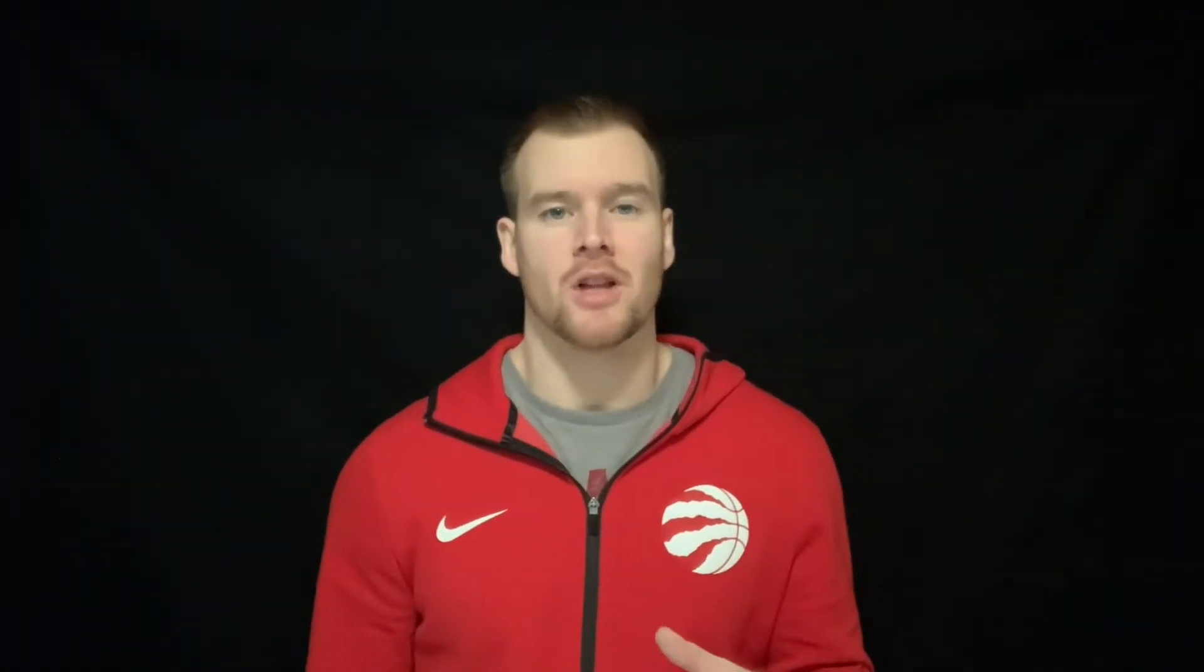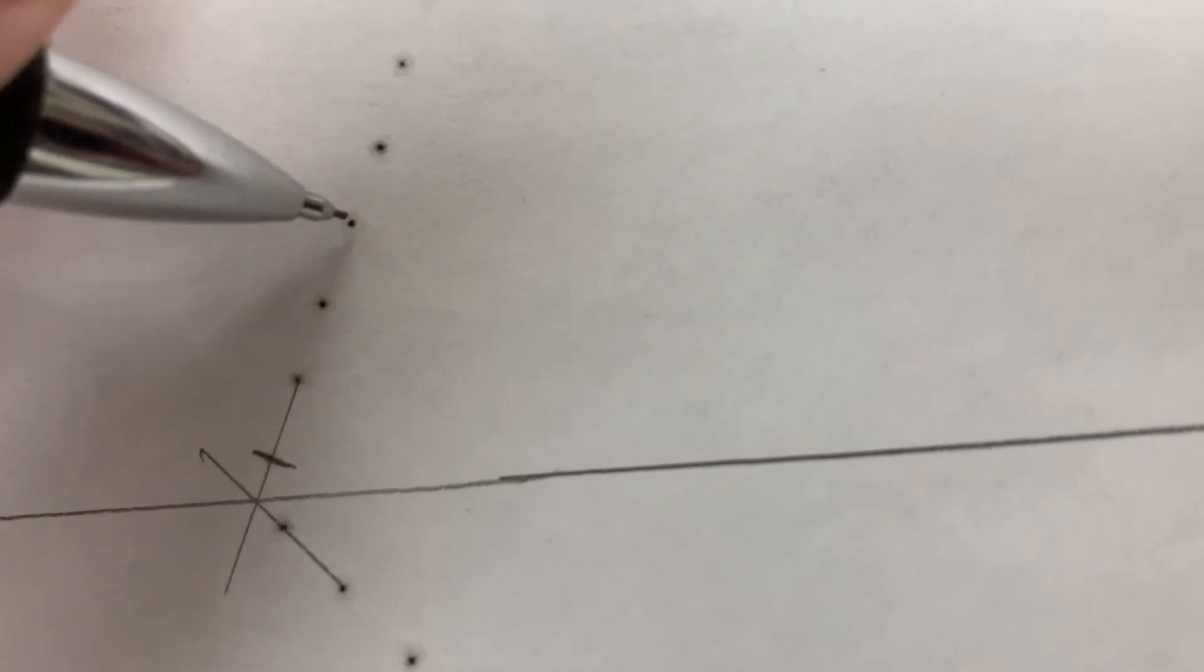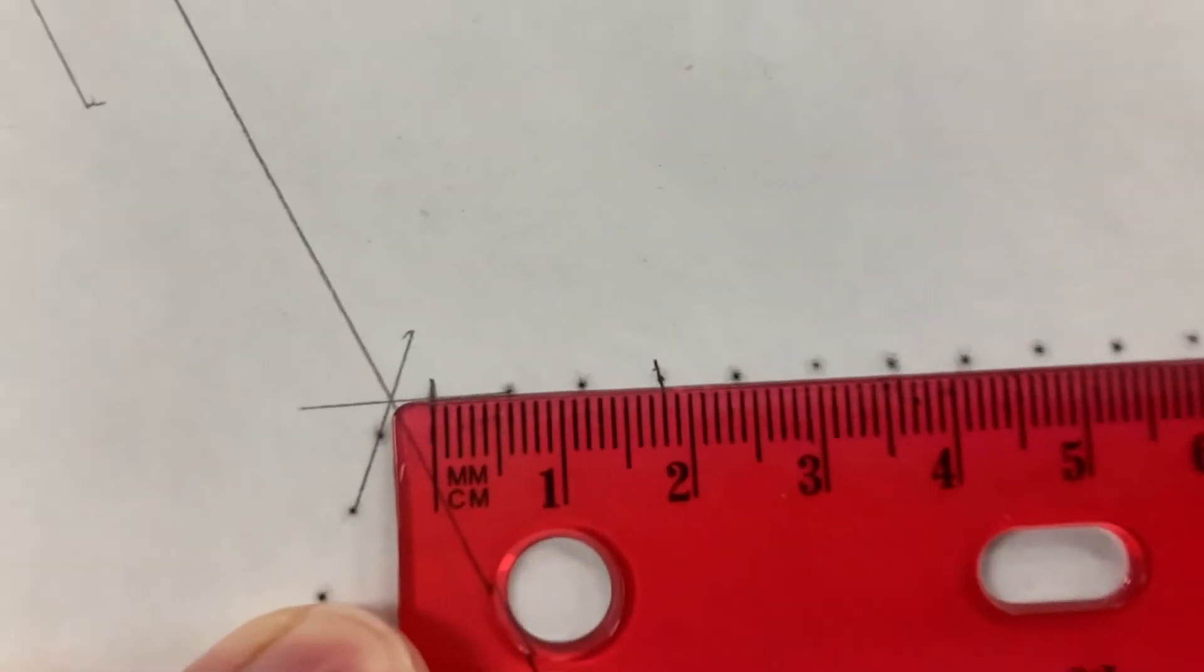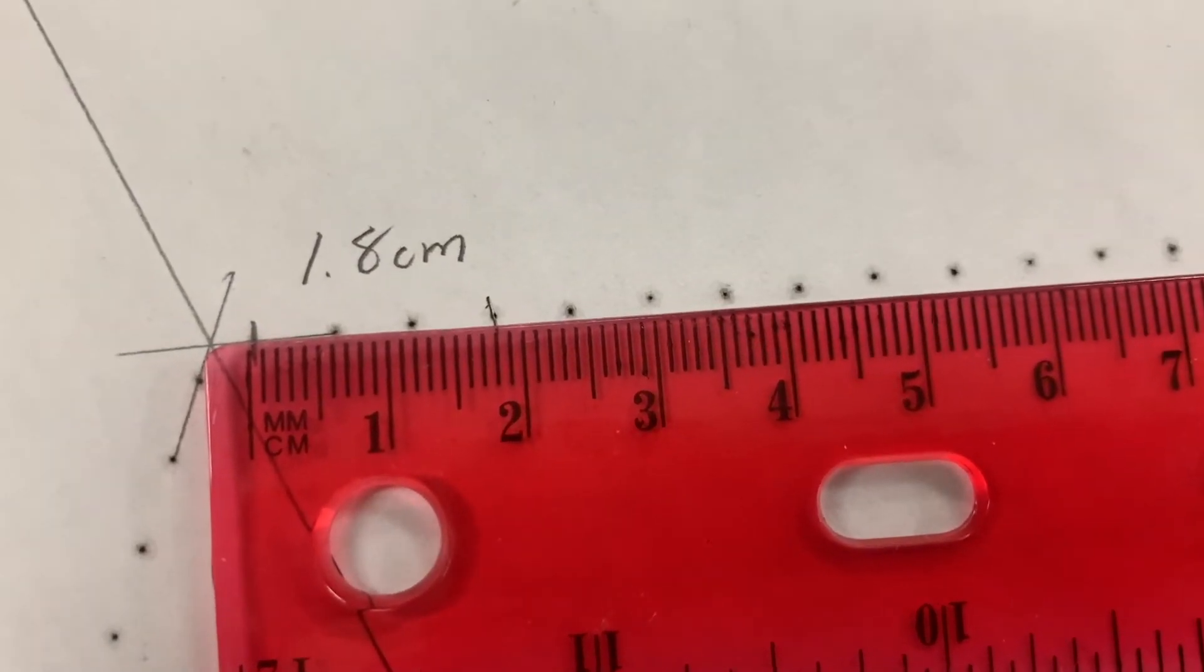Next to determine our velocity we're going to look at four dots or three intervals of sparks and measure the distance between those four dots. As mentioned before now we can use that displacement and compare it to the time elapsed in those three sparks to figure out how fast they were going.